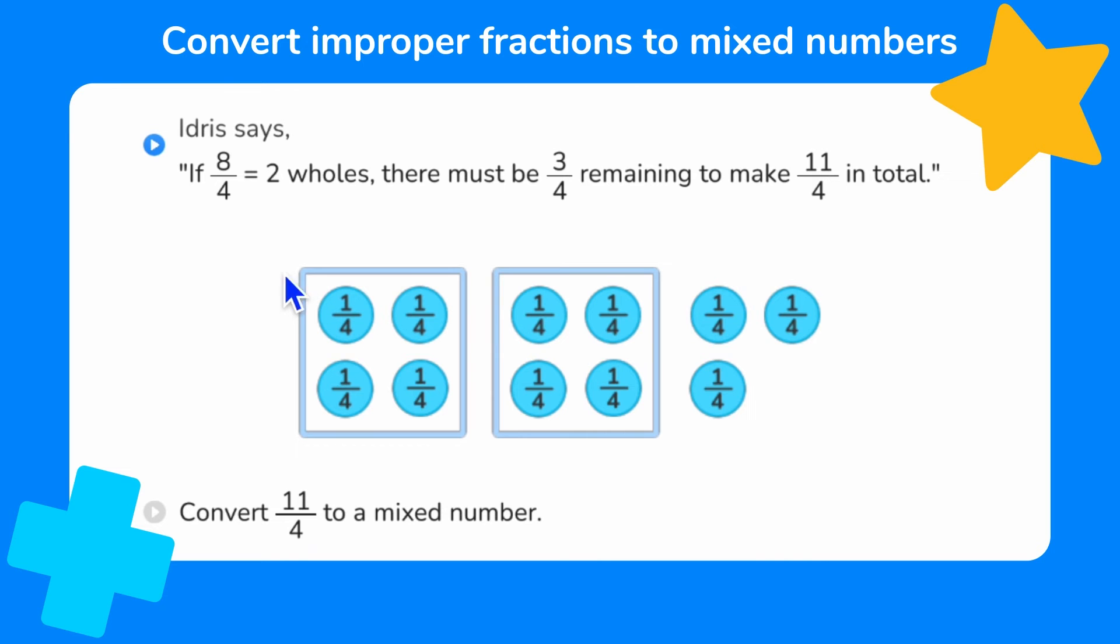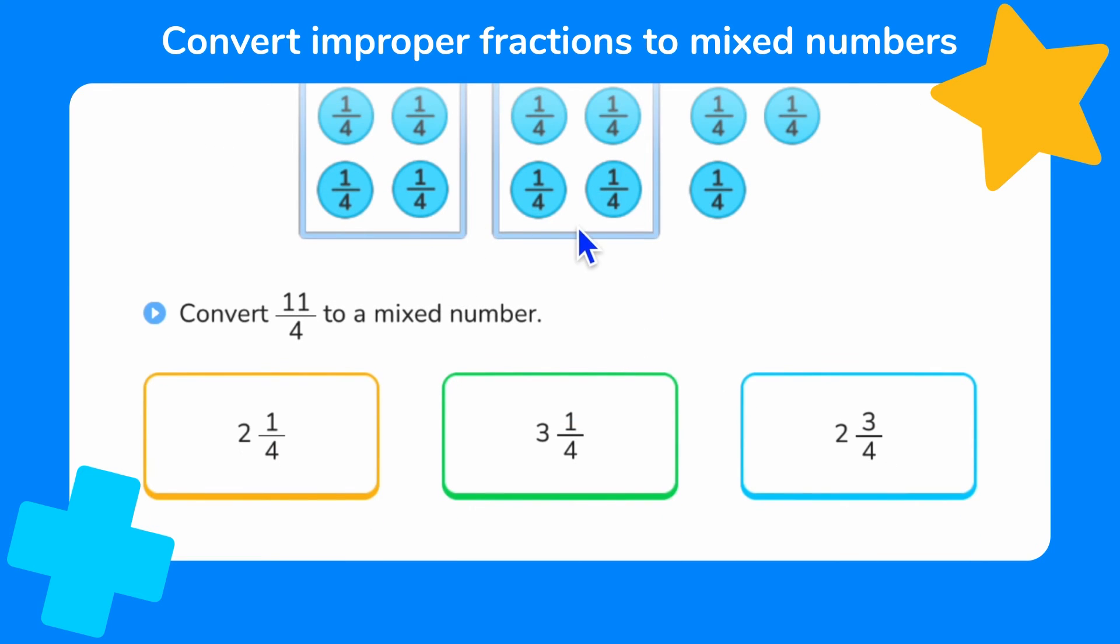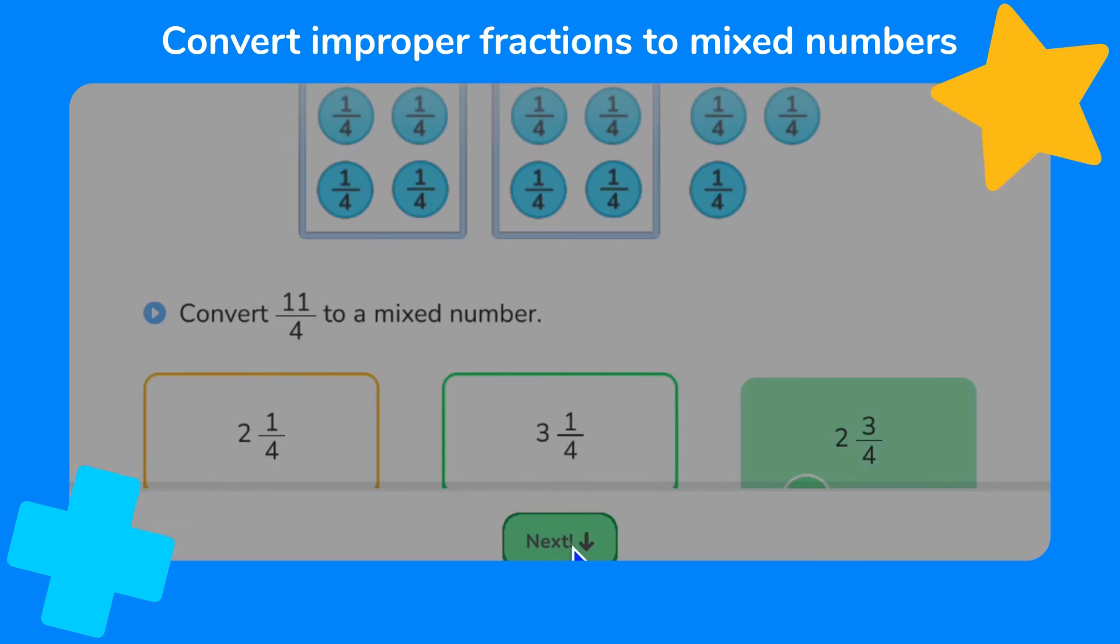Now Idris says if 8 quarters equals 2 wholes, there must be 3 quarters remaining to make 11 quarters in total. So we can see that in our model. We've got 4 quarters here making 1 whole, and another 4 quarters here making another whole. And then there are 3 quarters here left over. So we can see that 11 quarters is equal to 2 wholes and 3 quarters. So to write that, we show it as 2 wholes and 3 quarters. So well done if you got that one.